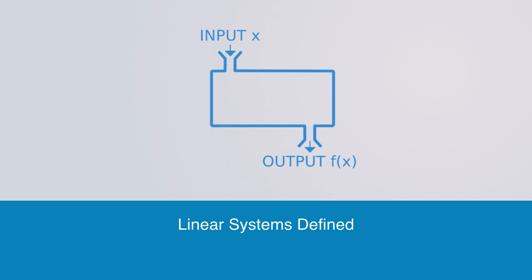Before we can talk about non-linear systems, we need to first have a basic understanding of what a linear system is. Linear systems are defined by their adherence to what is called the superposition principles. There are just two superposition principles and they're called homogeneity and additivity.